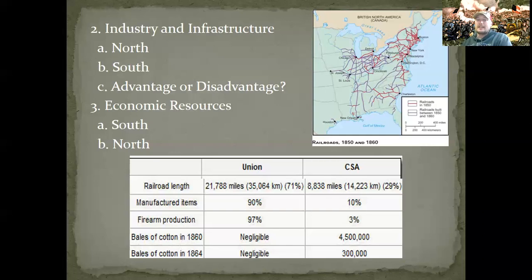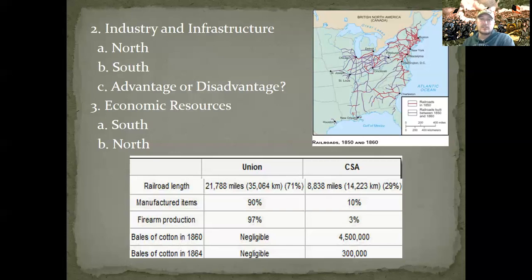When we break it down looking at population, infrastructure, industry, and economic resources, almost every check mark is for the North. The only thing the South really has going for it is their will to fight and their leadership. Next time we meet we're going to look at both of those — we're going to look at the strategy, what the South is really trying to do to win this war, and we'll get the fighting started. Thanks for listening. Please email me if you have any questions, and hopefully you've written down some questions in the margin — I'll be happy to answer those on Thursday when we get together online.